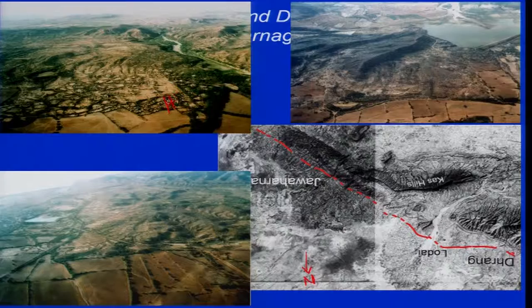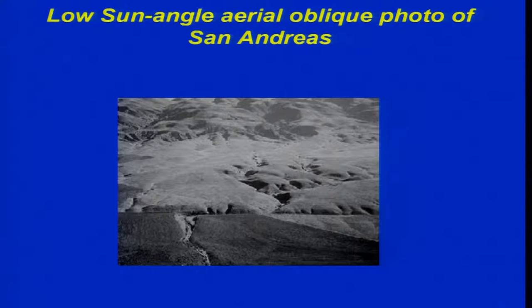This is a high oblique photograph, this is a low oblique photograph, and this is also a high oblique photograph. This low sun angle oblique photograph is from the San Andreas fault — we are unable to see the horizon. It was taken to map the San Andreas fault system where you can see the drainage and the fault crossing the area.